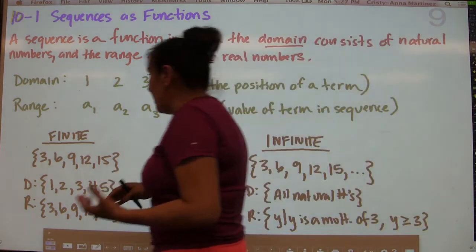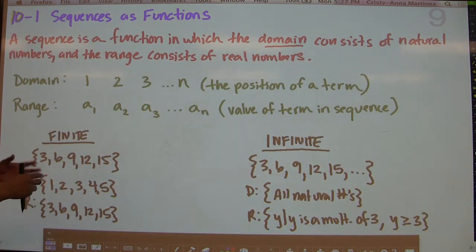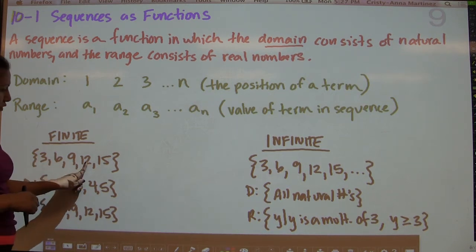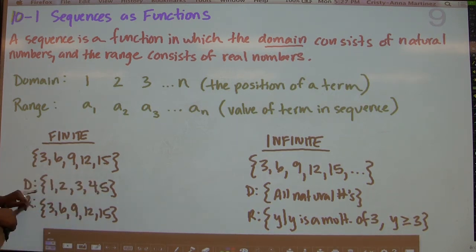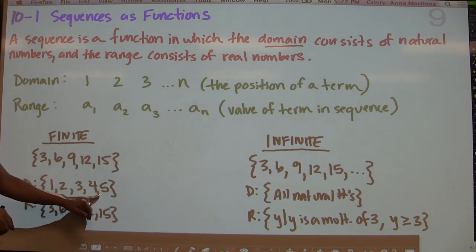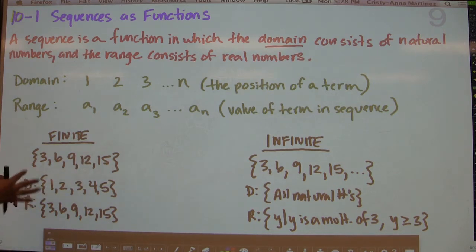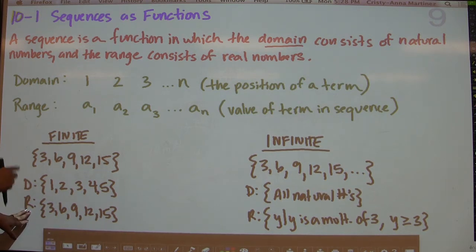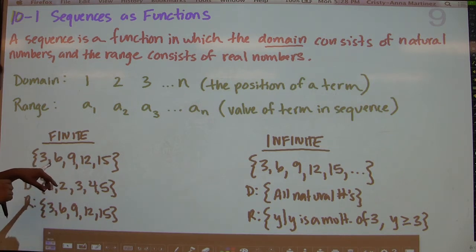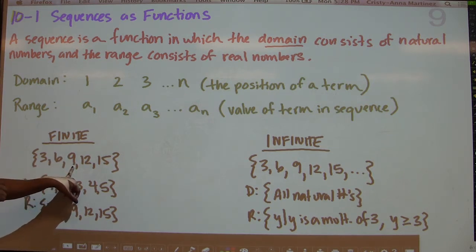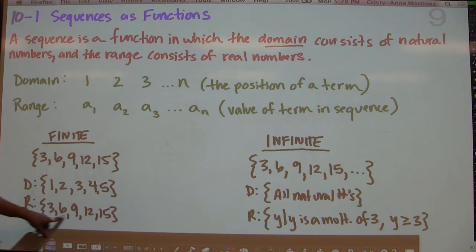The domain is the position of the term — so this is the first term, second term, third term, fourth term, fifth term — making the domain 1, 2, 3, 4, 5. The range is the value that each term has. So the first term in this sequence has a value of 3, and the third term has a value of 9.